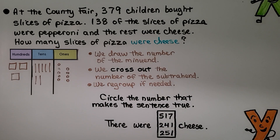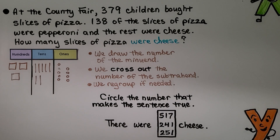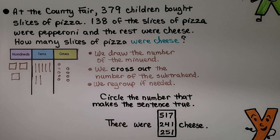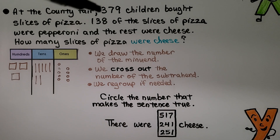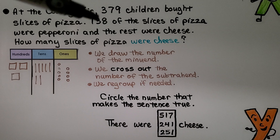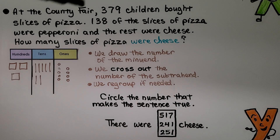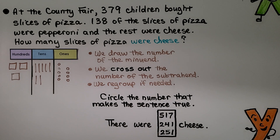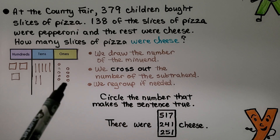This one says at the county fair, 379 children bought slices of pizza. 138 of the slices were pepperoni and the rest were cheese. How many slices were cheese? There were 379 in all; 138 were pepperoni. If we take away the pepperoni from the total, we'll know how many were cheese. We draw 379 as 3 hundreds, 7 tens, 9 ones. We're going to take away 1 hundred, 3 tens, 8 ones. We look at the ones — can we take 8 away from 9?